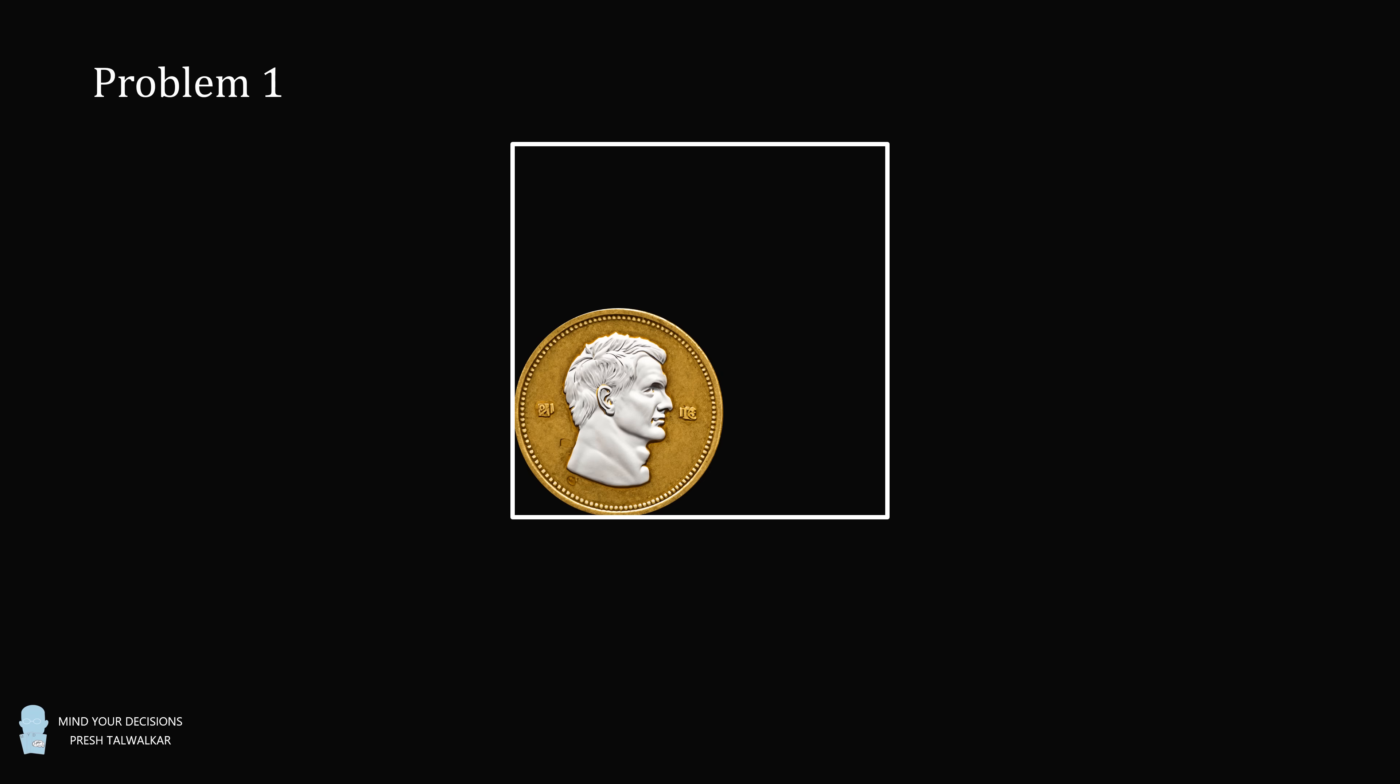Problem 1 from an Australian math competition. A coin rolls on the interior of a square along its sides without slipping. After the coin has returned to its starting position, the coin has made one whole revolution. If the coin's radius is equal to 1, what is the side length of the square equal to?